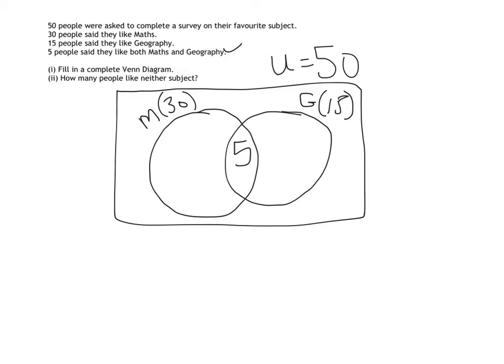Now because the entire maths circle should represent 30 people, I'm not allowed to just fill 30 into the other part of my Venn diagram, which is what a lot of students are going to do. We need to think that that entire circle should add up to 30, but there is already 5 people inside that circle. So therefore, we are going to do 30 minus 5, and that's going to give me 25 people who just like maths and who do not like geography as well.